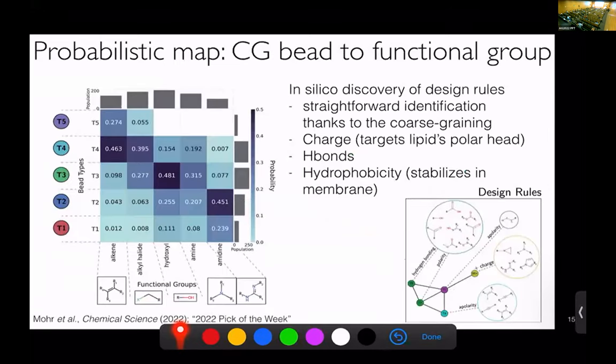Of course, these bead types here do not tell you what atomistic chemistry to use. One thing we can do is build some sort of probabilistic map from functional groups to bead types in a forward way. You can take a large data set of compounds, something like the GDB, you coarse-grain them all, and then you can see what functional groups lead to a particular bead type. What we end up with are certain sets of design rules for compounds to be selective. Things such as the compounds will have a charge, which makes sense because it wants to target the lipids' polar heads. It wants to have hydrogen bonds. It wants to have hydrophobicity enough so that it stays stable at the interface of the membrane.